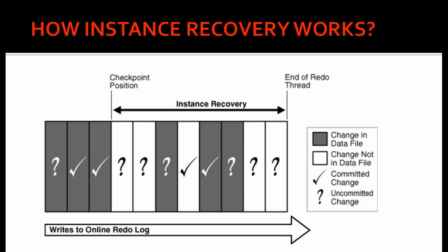So the first step is roll forward, the next is roll back, and then open the database. Roll forward: all the committed transactions which were not written to the disk will be written to the disk. Roll backward: all the uncommitted transactions which were written to the disk will be removed from the disk, and then the database is opened. This is all about instance recovery.